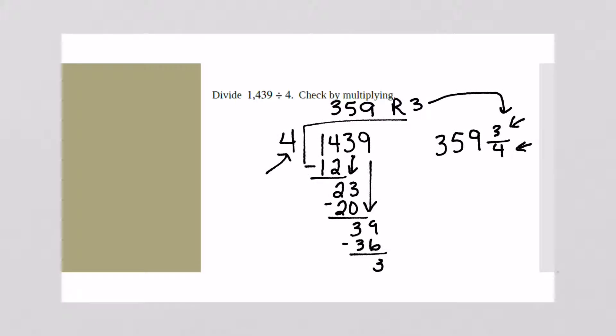So how you would check this. Let's say that I want to check my work. I would do 359 times 4. And I would see that I get something close to 1,439. It won't quite be 1,439 until I add in my remainder. So let's do 4 times 9 is 36. 4 times 5 is 20, plus 3 is 23. 4 times 3 is 12, plus 2 is 14. Then you have to add in your remainder. And you should get the number that you started out with. And we did. So we do know that this right here is the correct answer.